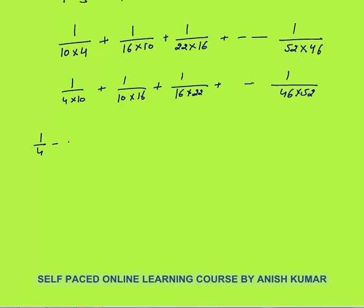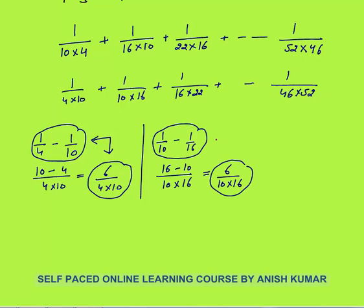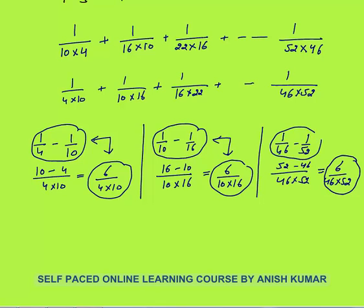Now this is a similar format to questions 1 and 2. What is 1/4 − 1/10? LCM is 4×10, giving (10−4)/(4×10) = 6/(4×10). So 6/(4×10) is the same as 1/4 − 1/10. Similarly, 1/10 − 1/16 = 6/(10×16), and by the same logic, 6/(46×52) is the same as 1/46 − 1/52.